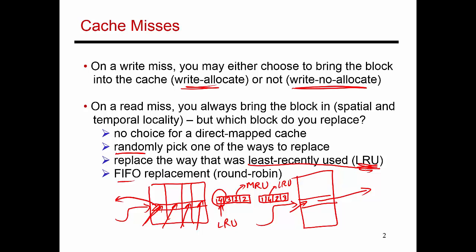To reduce those overheads, what is commonly used is a policy referred to as pseudo LRU. It tries to approximate the behavior of LRU without having the same overheads.